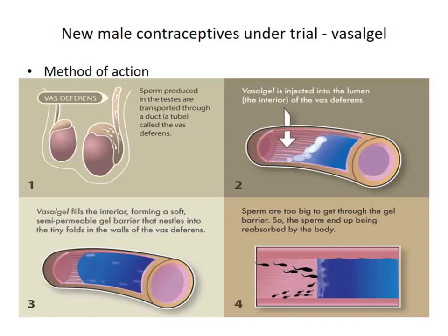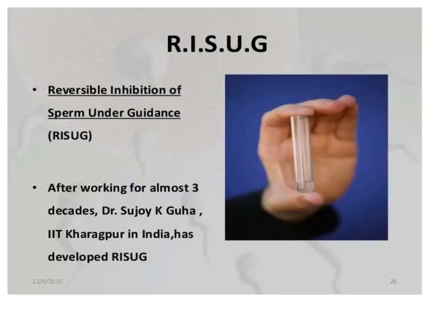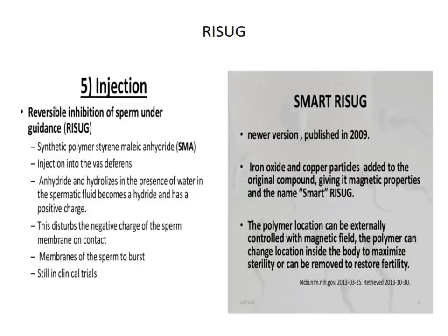One method under trial was vas gel — a gel placed inside the vas deferens which, when it solidifies, does not allow sperm to pass. A notable development is RISUG — Reversible Inhibition of Sperm Under Guidance — developed at IIT Kharagpur by Dr. Sujoy Kumar Guha. This changes the negative charge of the sperm so it is destroyed. Researchers are making it more advanced by adding copper or iron oxide particles so it becomes magnetic and trackable.